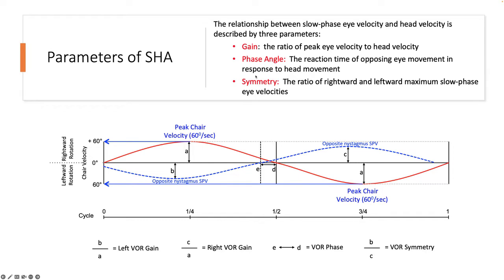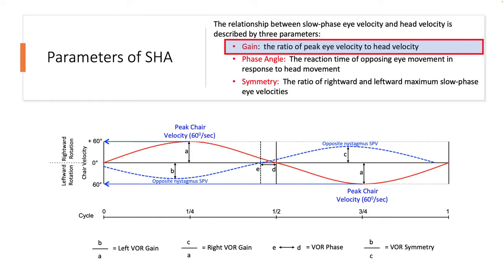First, we're going to talk about gain, which is essentially the ratio of the peak eye response — how robust the eye moves — in relation to the head velocity response.